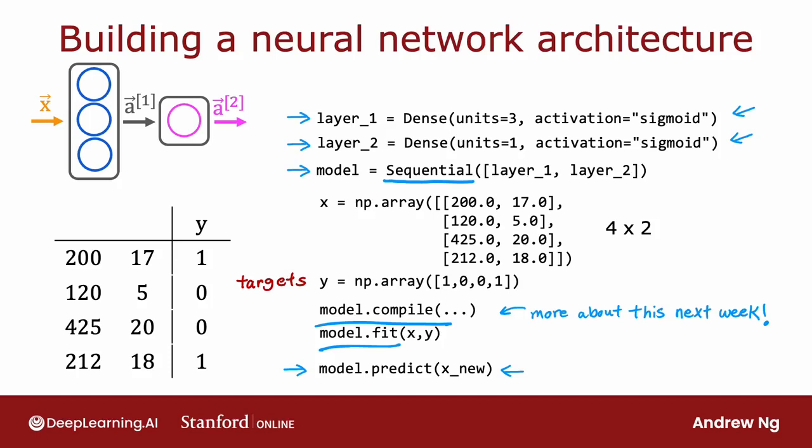Now, I want to take these three lines of code on top and just simplify it a little bit further, which is when coding in TensorFlow, by convention, we don't explicitly assign the two layers to two variables, layer 1 and layer 2, as follows. But by convention,